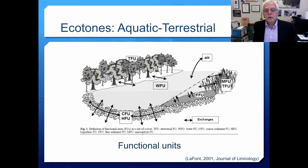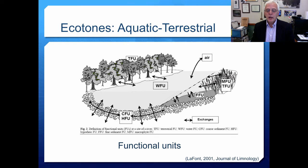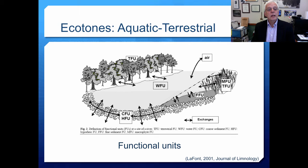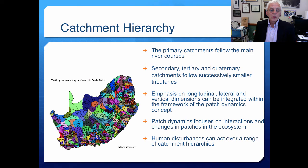A diagram of the aquatic-terrestrial ecotone shows a series of functional units: the water functional unit, coarse sediment functional unit, hyporheic functional unit, macrophyte functional unit, and the terrestrial functional unit. This shows exchanges across the various aquatic-terrestrial ecotones in different areas, including the macrophytic riparian zone, the terrestrial zone, and into the hyporheic. Great exchanges of materials result in great gradients of the kinds of organisms that live there.